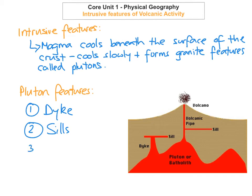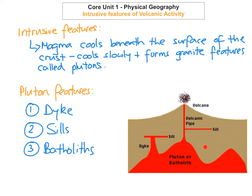The last one you need to know are batholiths. A batholith, as you can see, can be over 20 kilometers deep and up to 100 kilometers in width. They always have a dome shape with very steeply sloped sides. They form when magma intrudes within the crust, and since the molten magma cools really, really slowly, when it solidifies it forms very large crystals and granite rock. An example of a batholith you can learn in Ireland is the Leinster Batholith.